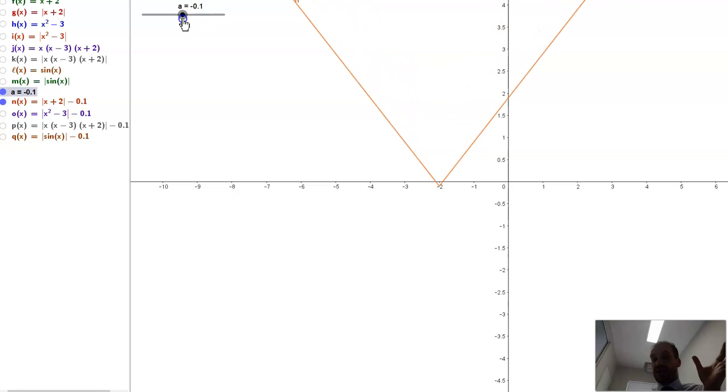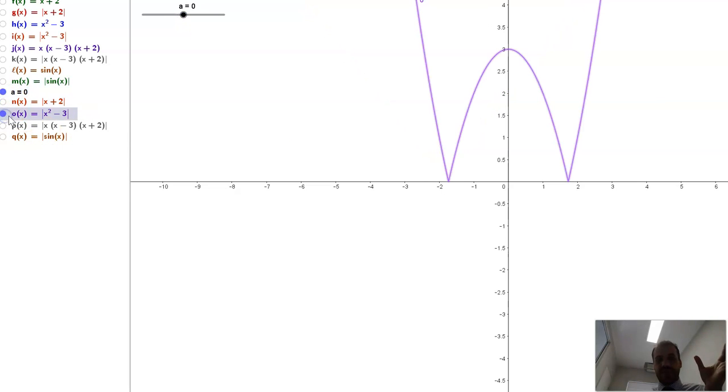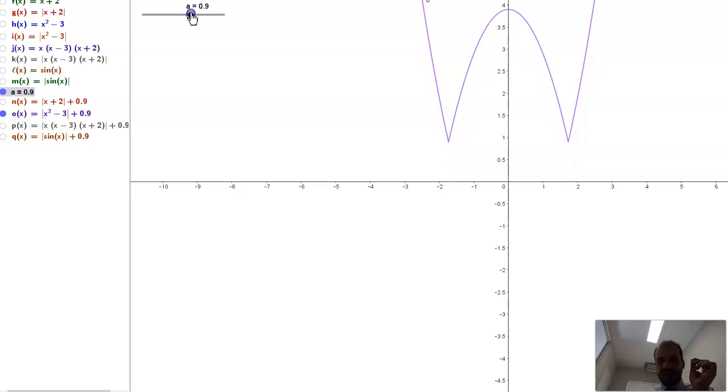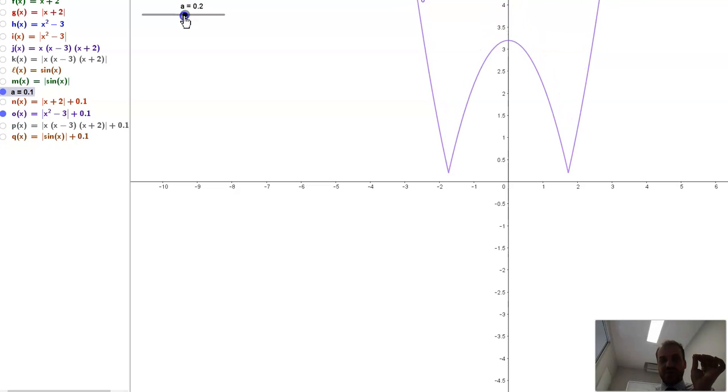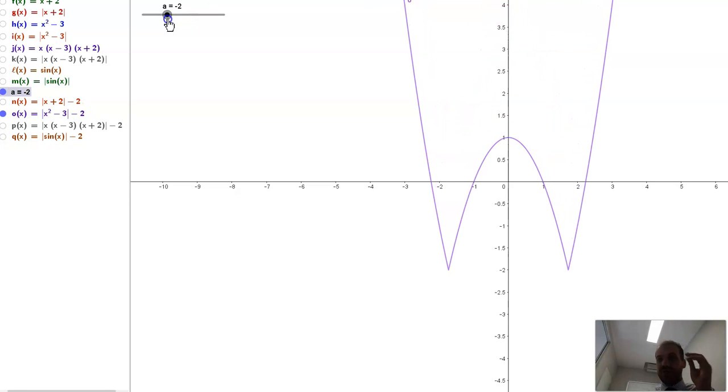Now this will work for any absolute value function. So if I put that back to 0, now we consider x squared minus 3. So this is an absolute value function of a quadratic. If I add some value to that, it'll move up. The entire thing will move up. And if I subtract some function from it, it will move down.